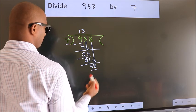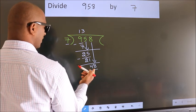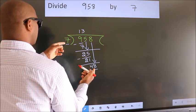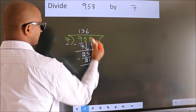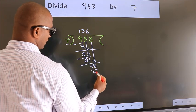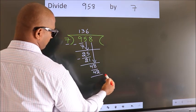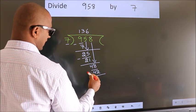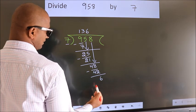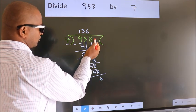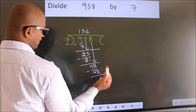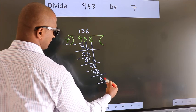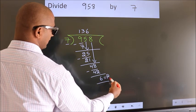So we have 48. A number close to 48 in the 7 times table is 7 sixes, which is 42. Now we subtract and we get 6. There are no more numbers to bring down, so we stop here. This is our remainder.